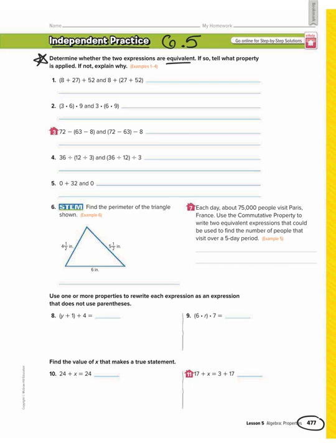Let's see if these are equivalent. We have to follow order of operations, so first we're going to do 8 plus 27, which gives us 35. Then 35 plus 52 gives us 87. For the second expression, do what's in the parentheses first, which is 27 plus 52 — that's 79. Then 79 plus 8 is 87. So they are equivalent; they both equal 87.